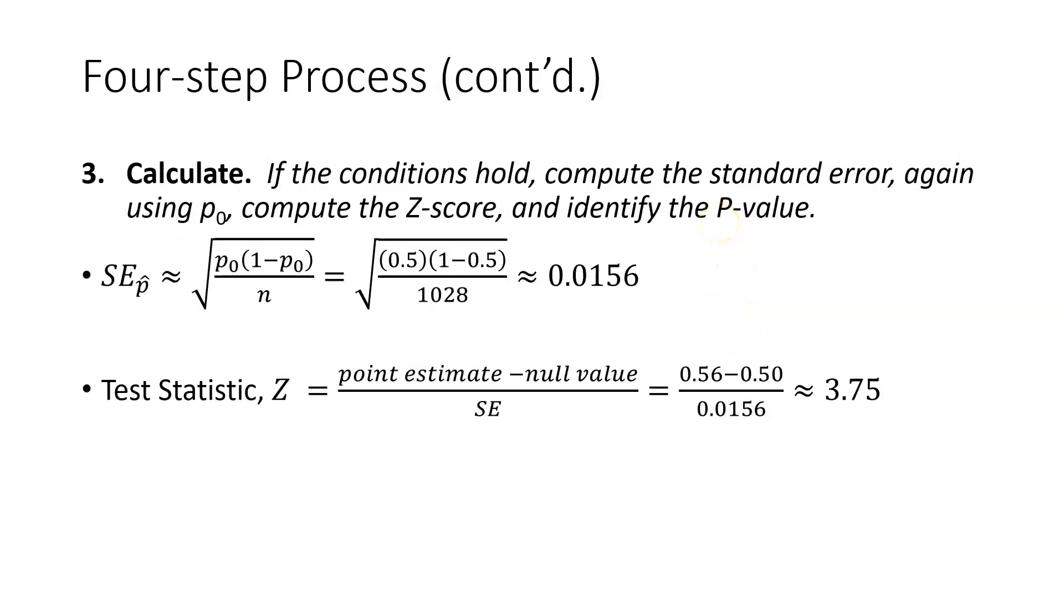Moving on to the third step, calculate. If the conditions hold, which in this case they both did, we're going to compute the standard error again using the null value P₀, compute the Z-score, and identify the P or probability value.